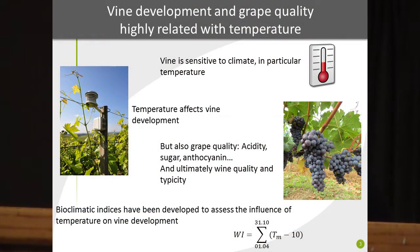As everybody knows, vines are sensitive to climate and particularly to temperature. Temperature affects vine development, grape quality, and at the end wine quality and typicity. To measure the effect of temperature on vine development, bioclimatic indices have been developed, and in this study we will use the Winkler index.